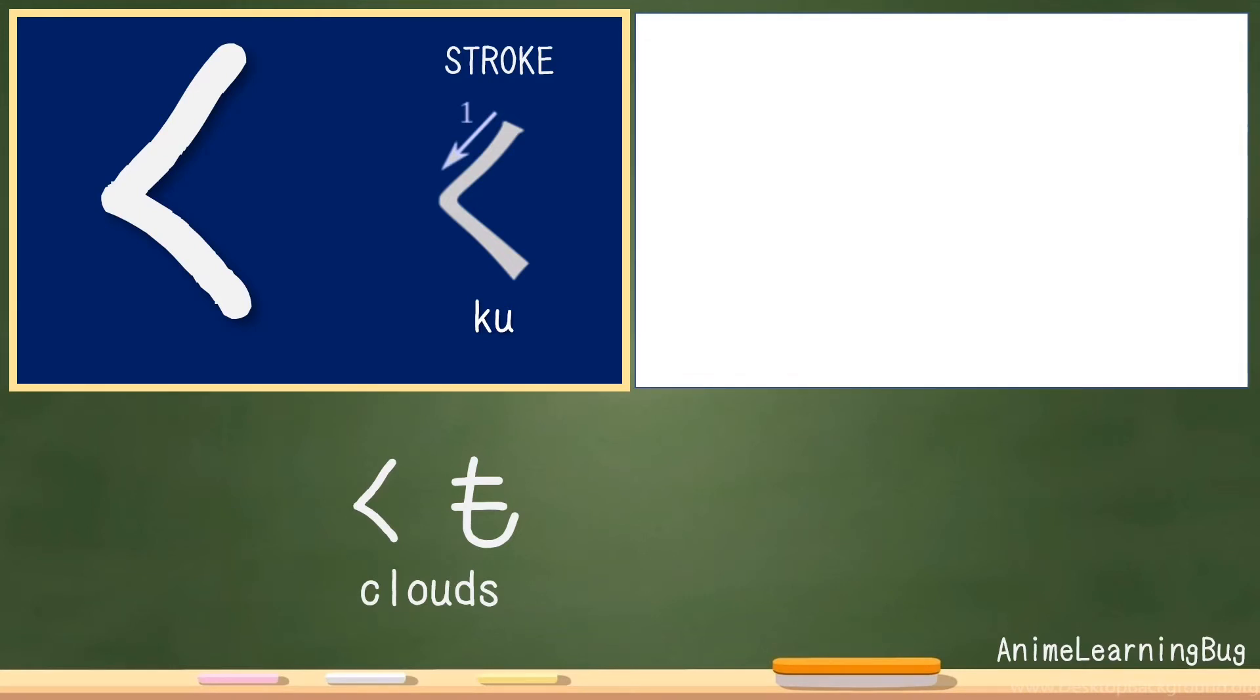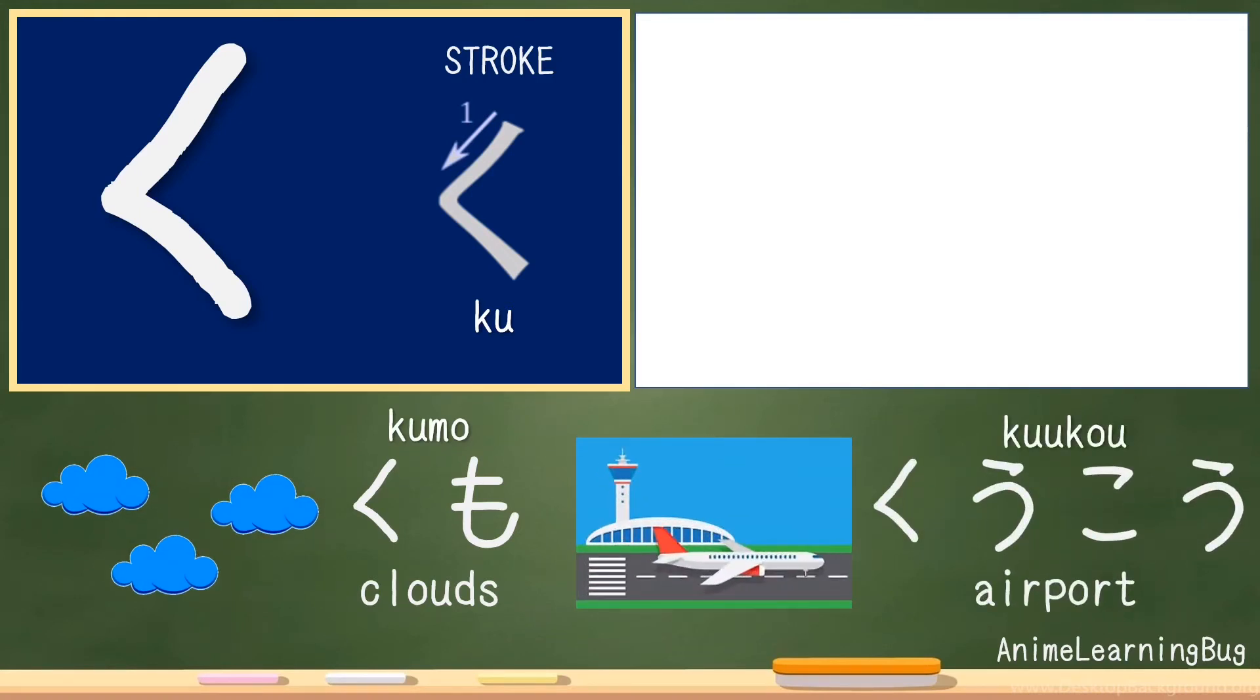Okay, that was easy. For examples, we have here kumo, which means clouds, and kuko, which means airport.